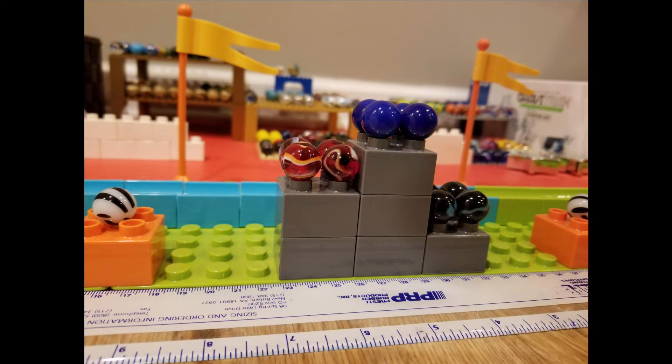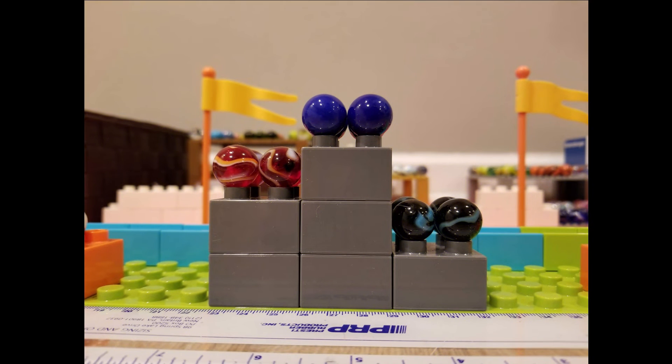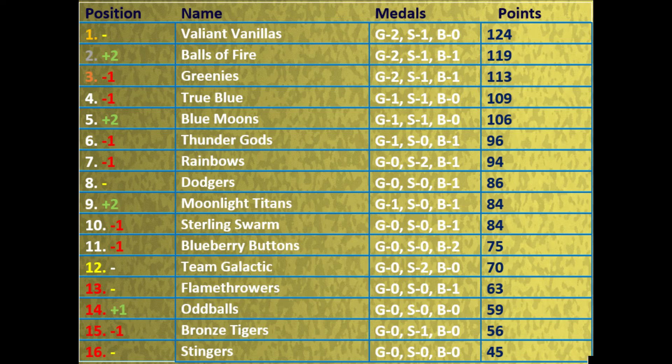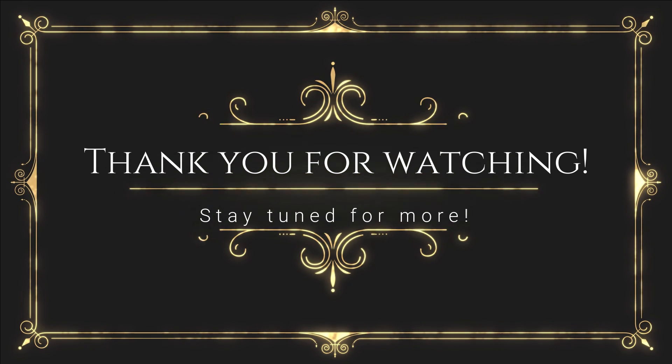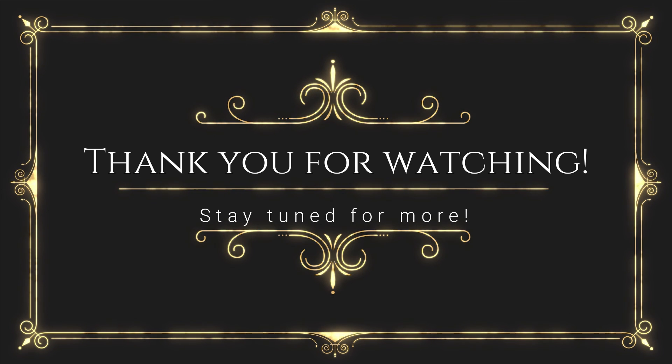But look at the Blue Moons standing on top of the podium again! That's their fourth gold medal in the Marvel Sports Games! Three from last season, one from this season. Balls of Fire happy to be up there, and of course the Moonlight Titans! One gold in balancing, nothing else really besides that! So our bottom four now are knocked out from podium contention! Team Galactic in twelfth can steal podium, but cannot win! And the Valiant Vanillas' lead has shrunk to five, but with Balls of Fire! The Greenies are down to third, and it's all slipping away from them! Thank you for watching, we'll see you soon!